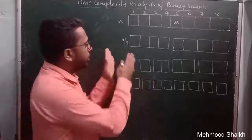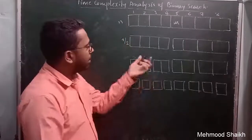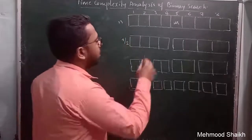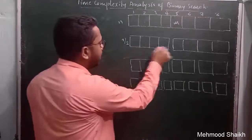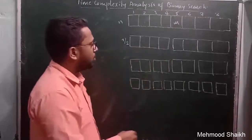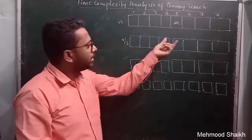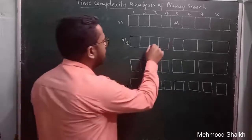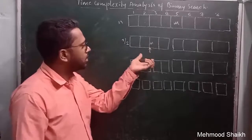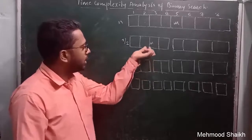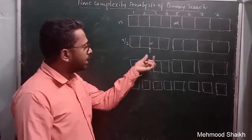We focus only on the left side, and the problem size n gets divided by 2 — our search space reduces from n to n/2. We then check the key element against the middle element of this left sub-problem.